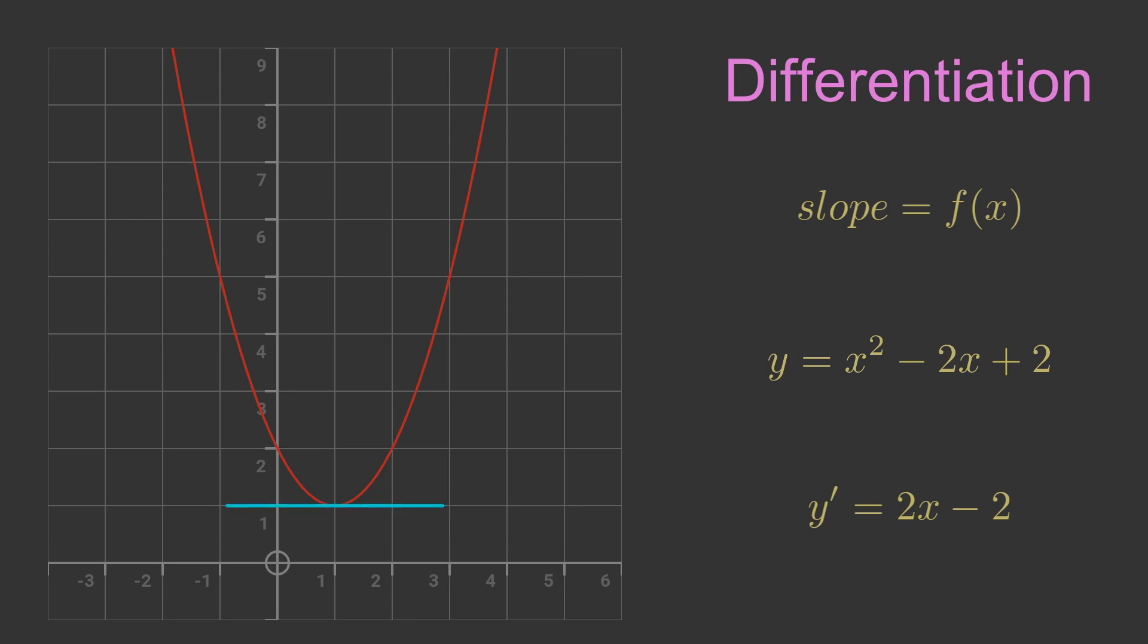When X is 1, 2X minus 2 is 0. This means that the slope is 0 when X is 1. This is the bottom of the U shape. When X is greater than 1, 2X minus 2 is positive and gets larger as X increases. This means that the curve slopes upwards and gets steeper as X increases. When X is less than 1, 2X minus 2 is negative and gets larger as X decreases. This means that the curve slopes downwards and gets steeper as X decreases. This matches the shape of the graph.